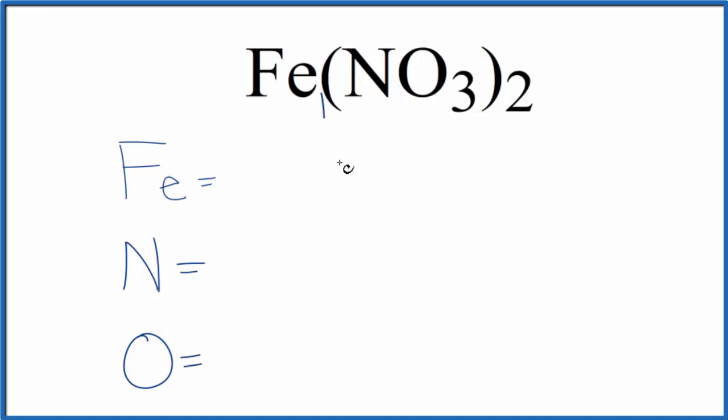So for iron, we have one iron. The one's not written, but it's there. So we have one iron atom.